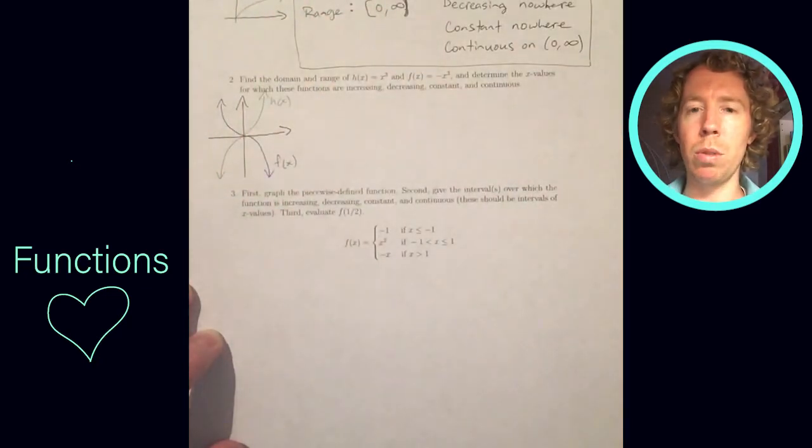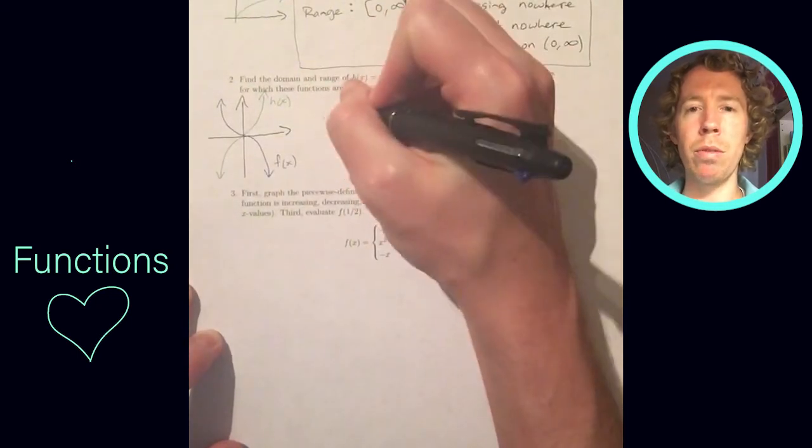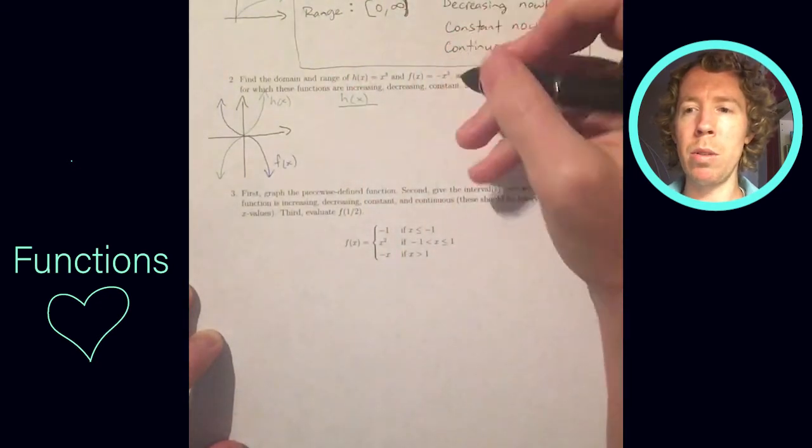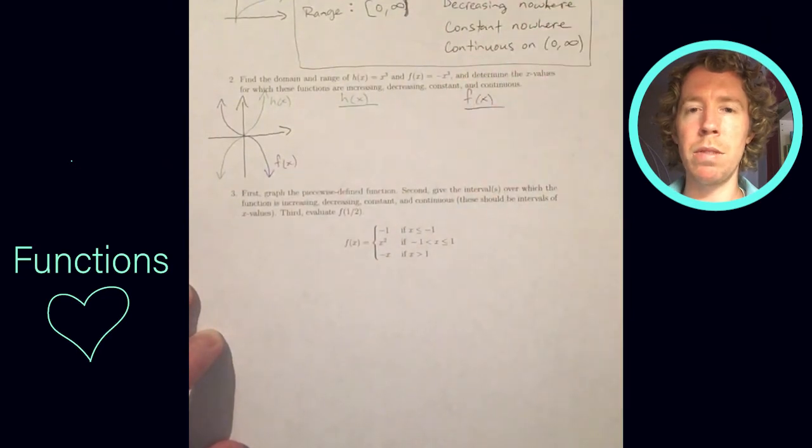The range for both of these functions is also all real numbers. That's because these graphs go down forever and they go up forever. So domain and range are both negative infinity to positive infinity.